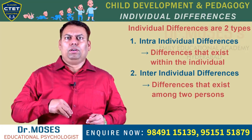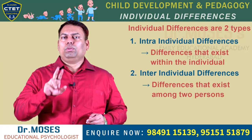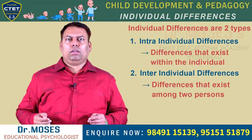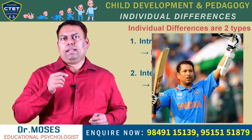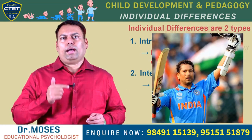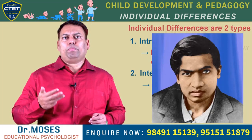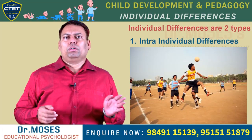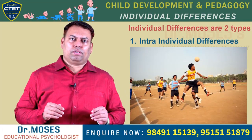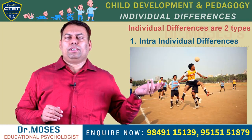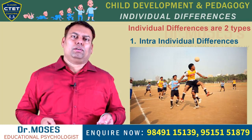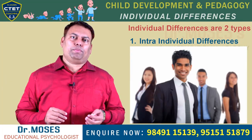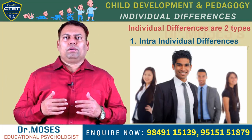Intra-individual differences refer to differences within the individual related to two abilities or two characteristics. For example, Sachin excelled in cricket but is poor in academics. Ramanujan excelled in mathematics but gets low marks in English. Vijay is good at sports but poor in physics. Amit is good at social relations but poor in memory power. John is good at management but poor in medical aspects.